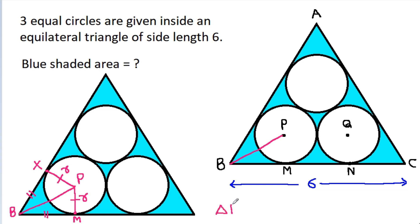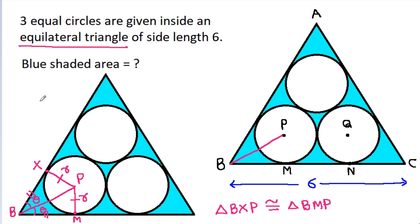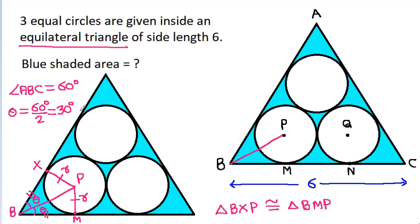So triangle BXP will be congruent to triangle BMP. That means the two angles will be equal. Angle ABC equals 60 degrees, so theta equals 60/2, which is 30 degrees.